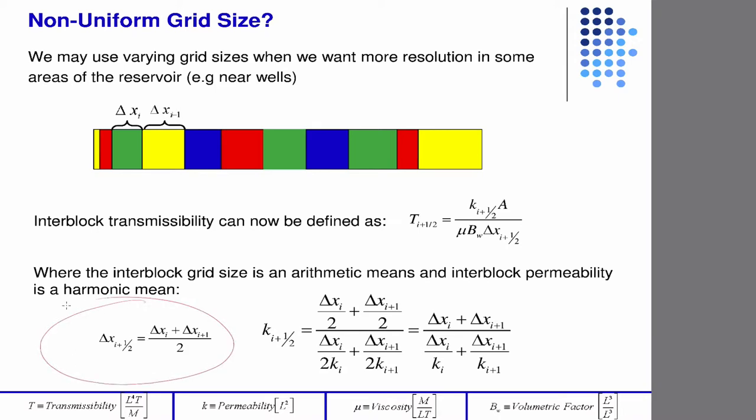So if you have smaller grids, your delta x at the boundary is just the normal average, and then the harmonic mean works out to be this for the permeability.